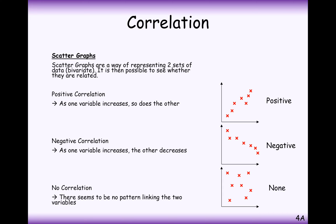I hope this is all very familiar to you. This would probably be described as a strong positive correlation. If points were more spread out, it would still look roughly positive, but it would probably be a weaker positive correlation rather than the strong positive correlation we had before.